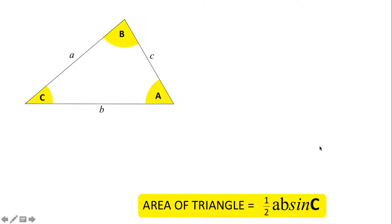So that proves the trigonometric rule for the area of a triangle: area equals a half ab sine C, where the small a and b are the sides, and the big C is the angle between those two sides.